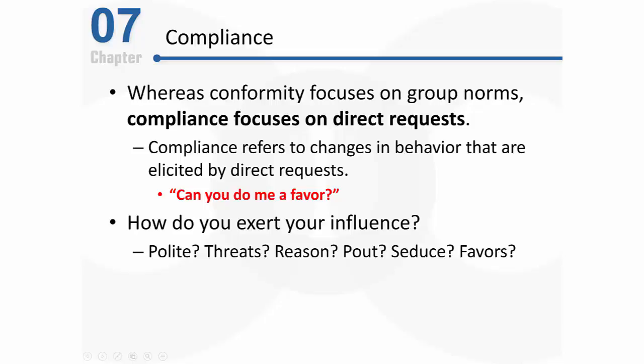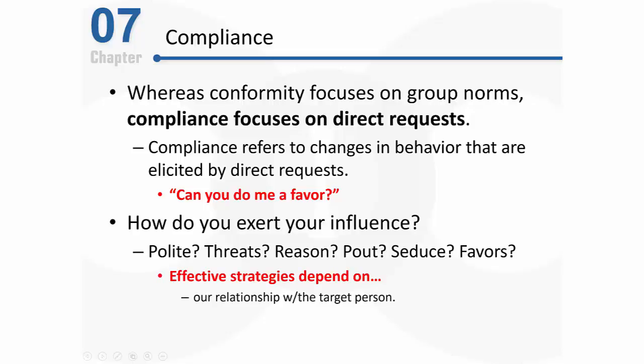Sometimes we elicit some emotional strategies — we might pout, or depending on the relationship we might try to seduce someone or offer them other favors. In general, effective strategies for gaining compliance depend on a variety of factors. For example, our basic relationship with the target person matters. If the person's not very well known, it's likely we'll want to simply be polite. But if the target person is our spouse, we might use playful seduction, or if it's a friend, we might offer some other type of favor.